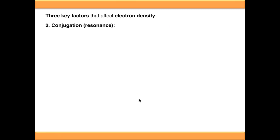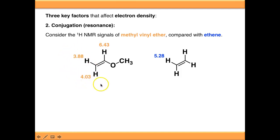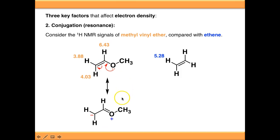The second key factor affecting shielding and deshielding is conjugation or resonance. Looking at methyl vinyl ether compared with a standard alkene such as ethene — the alkene hydrogens resonate at 5.3 ppm. In methyl vinyl ether, one proton is relatively deshielded at 6.4 ppm, and the other protons are relatively shielded at around 4 ppm. Drawing the resonance form, we push the lone pair of electrons from oxygen into the pi system, giving a resonance form with a formal negative charge on carbon, which shields those two protons — pushing electron density onto them effectively shields them from B0.